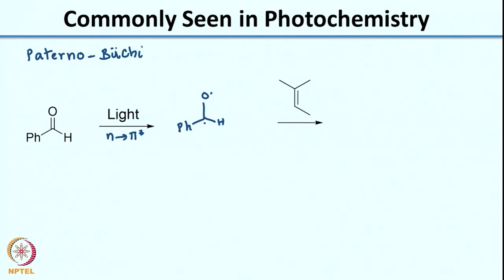I would like you to think for a minute. Based on the example I had shown in the previous slide, you can press the pause button now and try to see what would be the product when you react this biradical with the alkene shown. There could be 2 possible products and one of them would be the major product. Spend some time, write in your notebooks what the 2 possible products are, and then think as to which would be the major product.